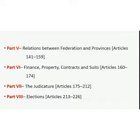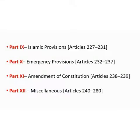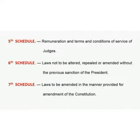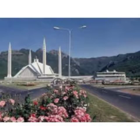Part 6 covers Finance, Property, Contracts and Suits, Articles 162 to 174. Part 7 is Judicial, Articles 175 to 212. Part 8 is Elections, Articles 213 to 216. As for the schedules, the first schedule is laws exempted from fundamental rights, the second covers election of the president, the third covers oaths, the fourth is the legislative list, the fifth and seventh schedules are also included. The constitution also covers the capital, four provinces, and tribal areas known as FATA.